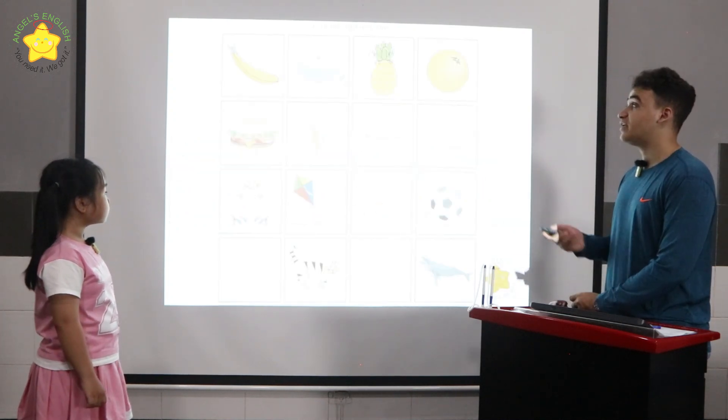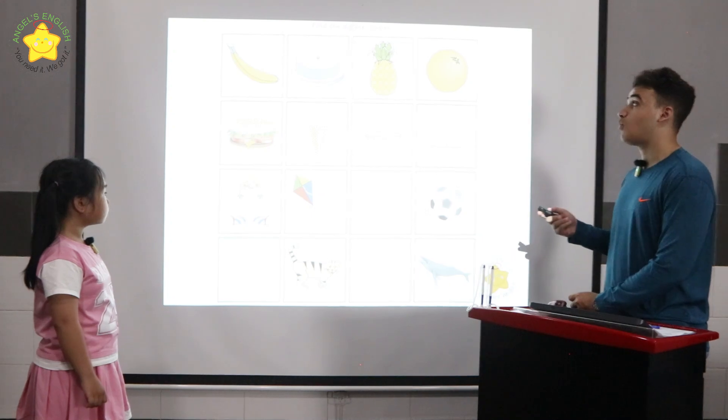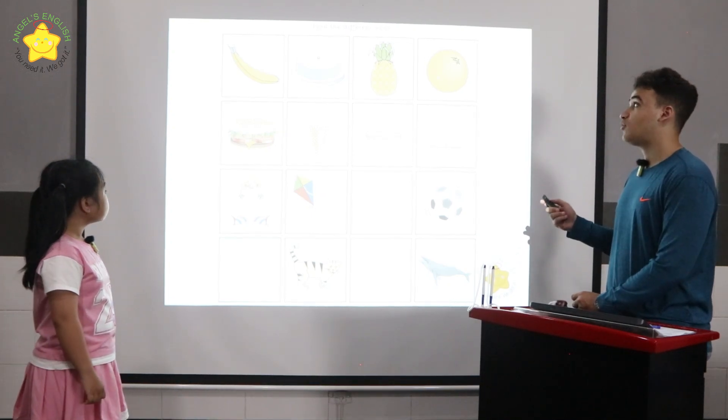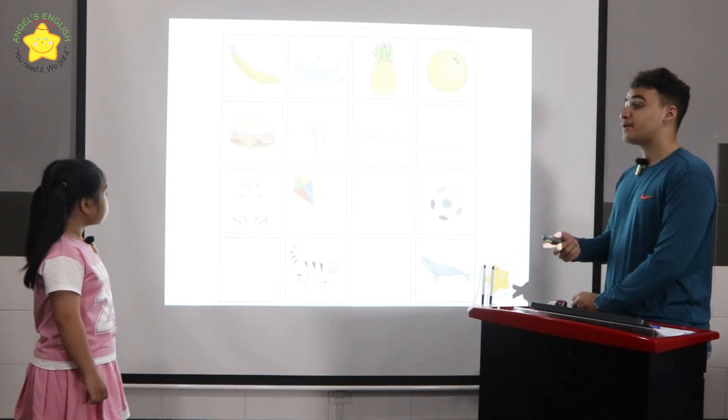Now this is called find the different one. In row one, the cake is different because the banana, the pineapple, and the orange are all fruits.